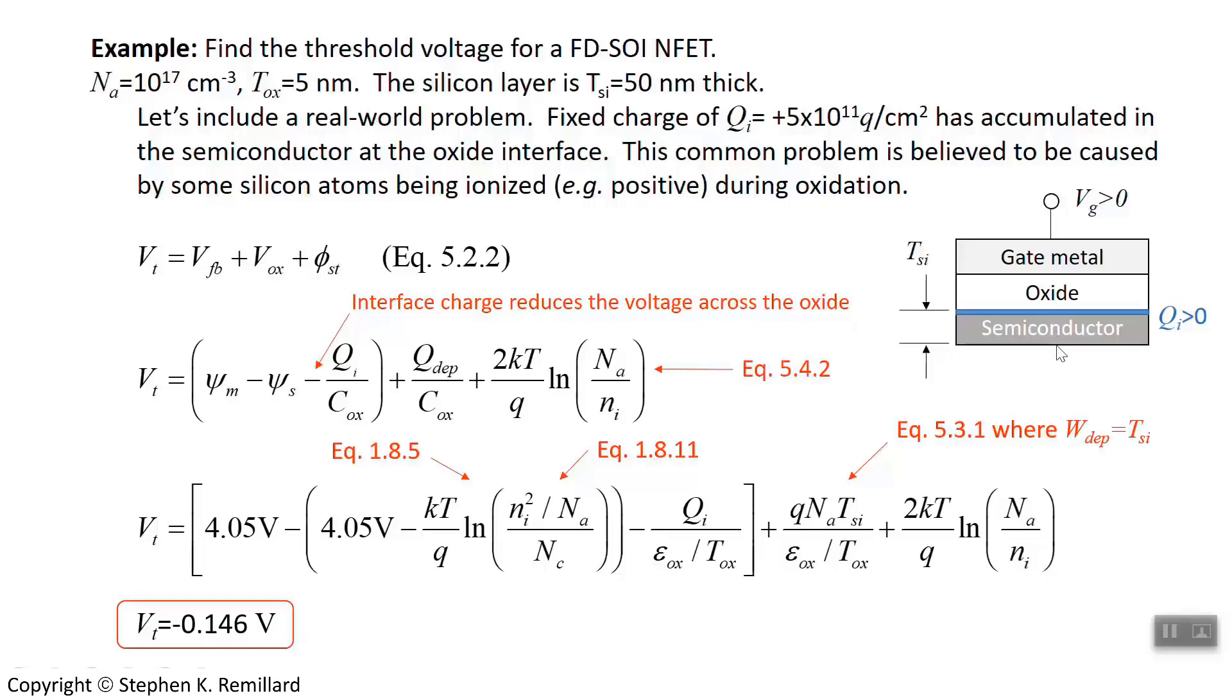You can't have a depletion layer as thick as you would calculate with the expression in Chapter 5 for a depletion layer thickness. It is fixed at the thickness of the silicon, so that's why this change was made. Put some numbers in, and you get a threshold voltage of minus 0.146 volts. Now that's silicon on insulator.